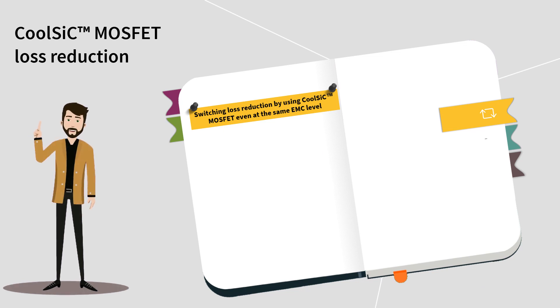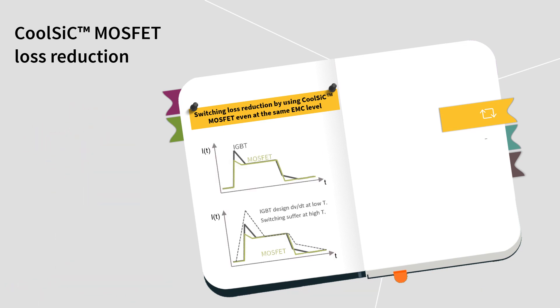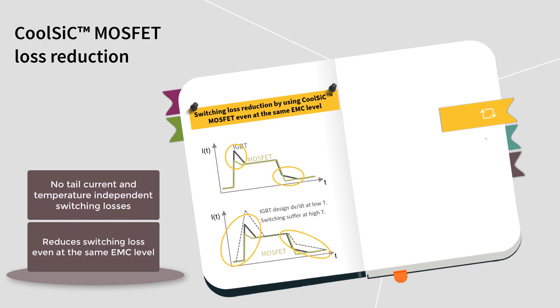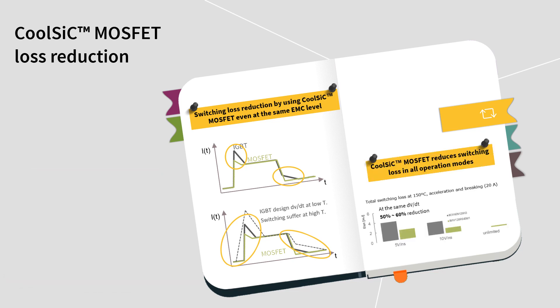Now, let's see how CoolSIC MOSFETs help with switching loss reduction. Due to its low reverse recovery charge, no tail current, and temperature-independent switching losses, the CoolSIC MOSFET reduces switching losses, even at the same EMC level. When compared to an IGBT at the same dV/dt condition, the CoolSIC MOSFET can reduce switching losses up to 60%.